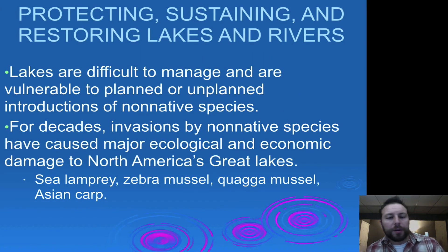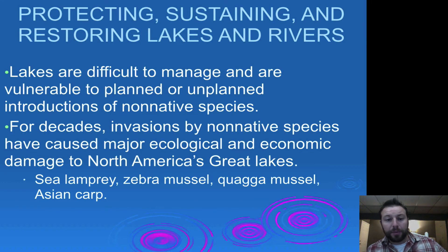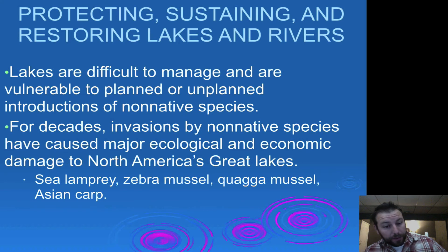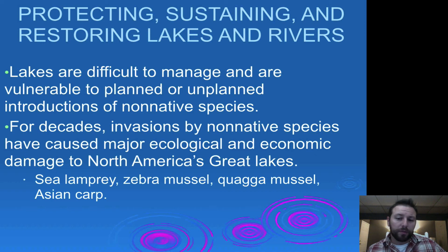Lakes are also pretty difficult to manage. People — sometimes accidentally, sometimes purposely — introduce non-native species. We see it here on Long Island, where certain aquarium plants have been introduced into lakes and have really overrun the area. Other examples include the sea lamprey, zebra mussel, quagga mussel, and Asian carp, which have been introduced for various reasons into our freshwater systems, and we're having a tough time getting them out.